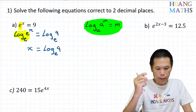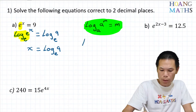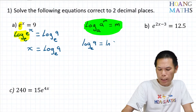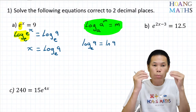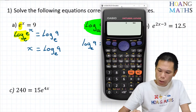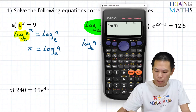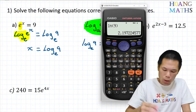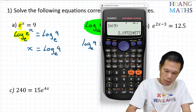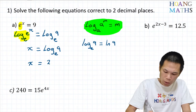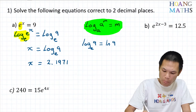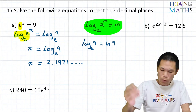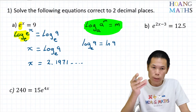Please do not forget that. Now, log base e of 9 is exactly the same as ln of 9. So I just put that on a calculator: ln(9), that is log base e of 9. So there you go: 2.1971 and so on. So x is equal to 2.1971...